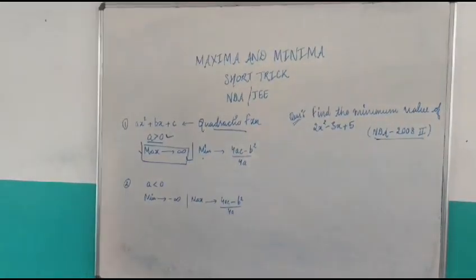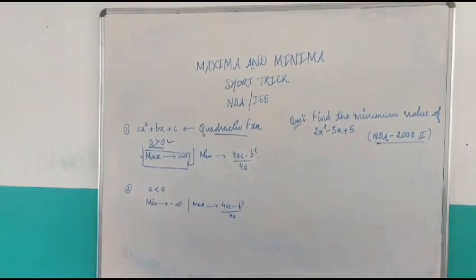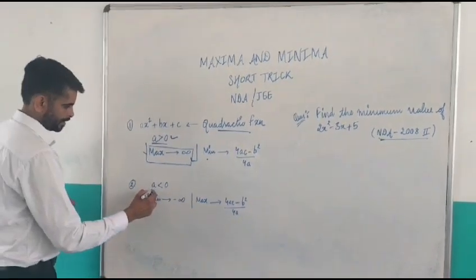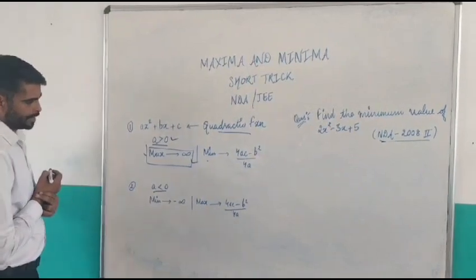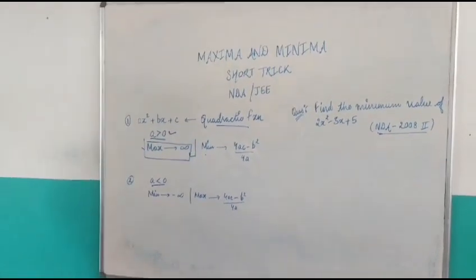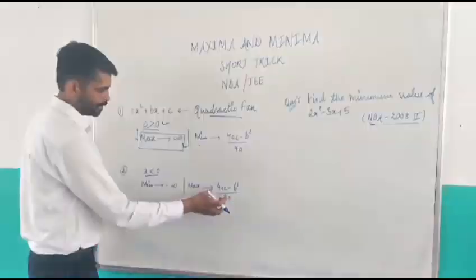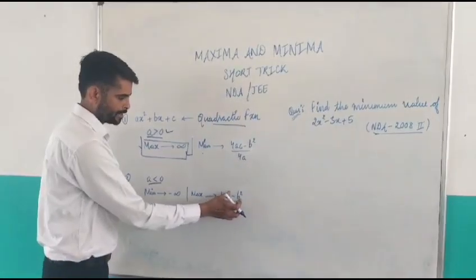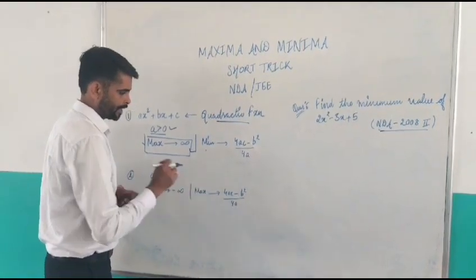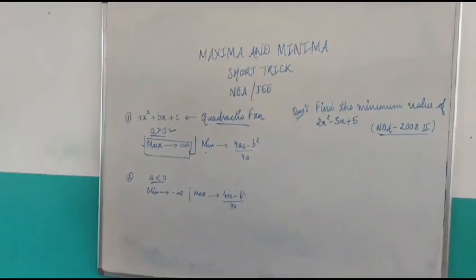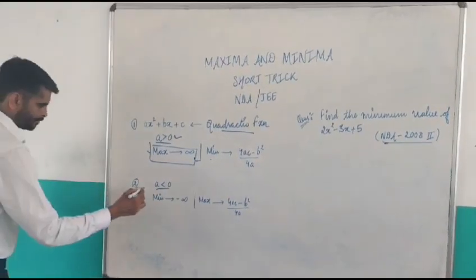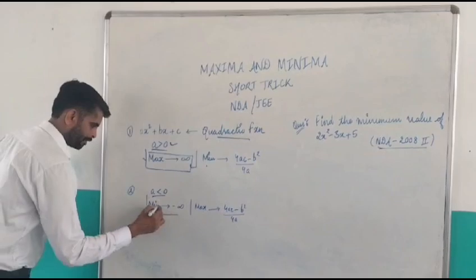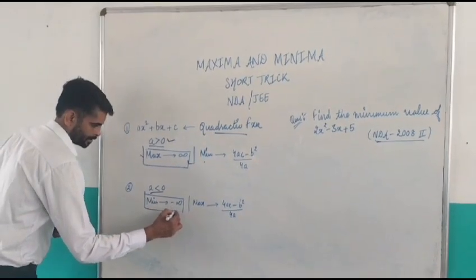And if here A is less than 0, then in this case, maximum value will be 4AC minus B squared divided by 4A. And here minimum value is minus infinity. Means, it does not exist.